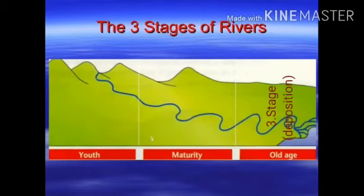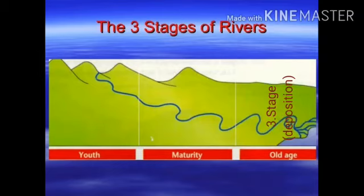The third stage is the old stage. At this level, the river has a low flow gradient and hence energy is also very low. The carrying capacity decreases and the river starts depositing on its banks. The river becomes very lethargic here, and this stage is found near the end of the river.